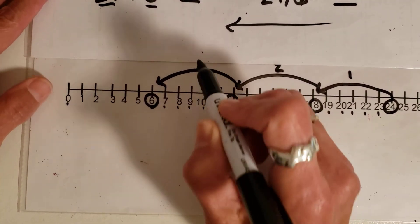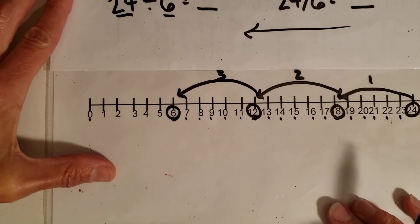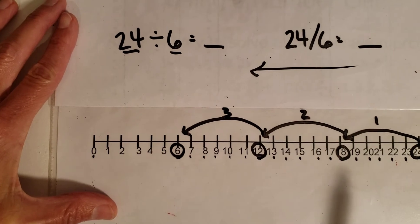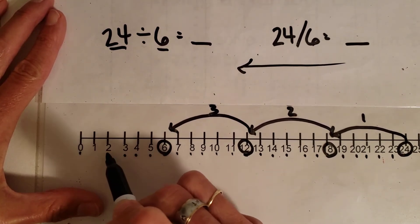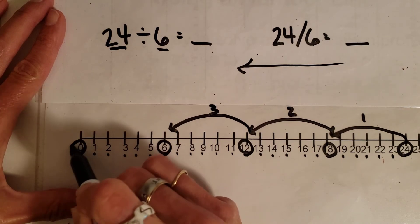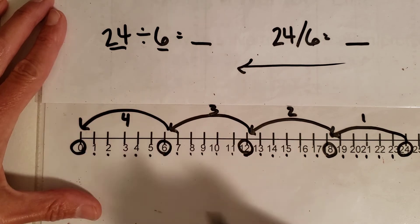Alright, I'm up to 3 hops right now but I still have not made it back to 0. And that's going to be my ultimate goal is to make it back to 0. 1, 2, 3, 4, 5, 6. Alright, whoa! Whoa! I've made it to 0 and I've made my 4th hop.